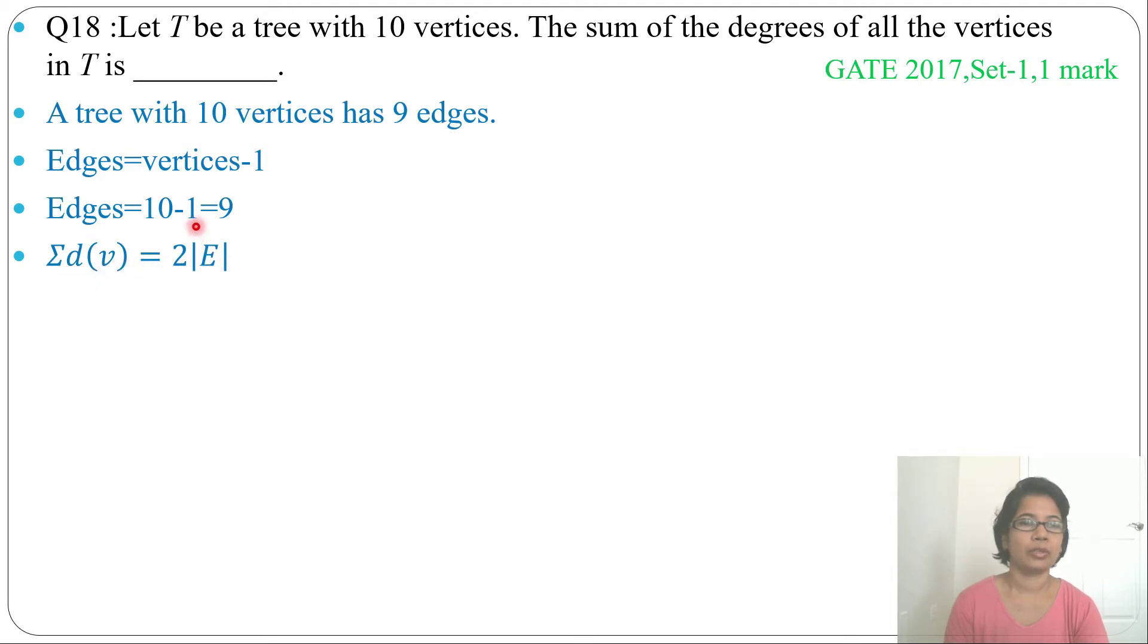So here E we found that is 9. So that will be sum of all degree will be 2 into 9. That is 18.